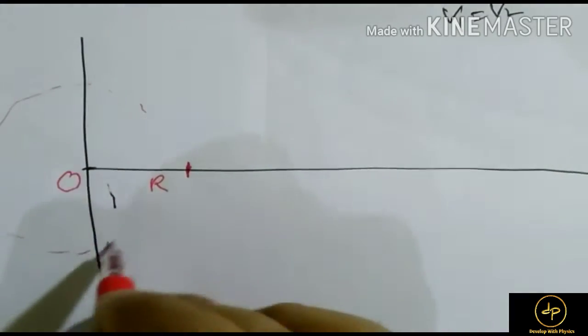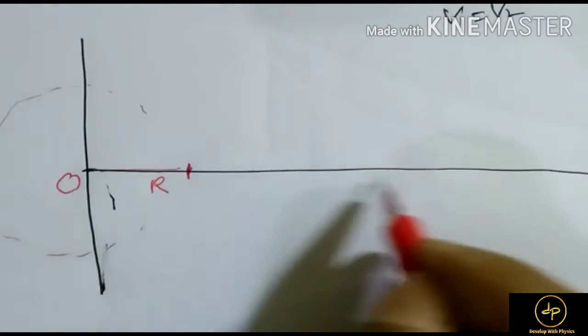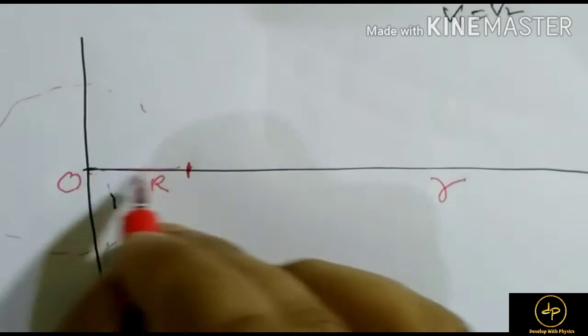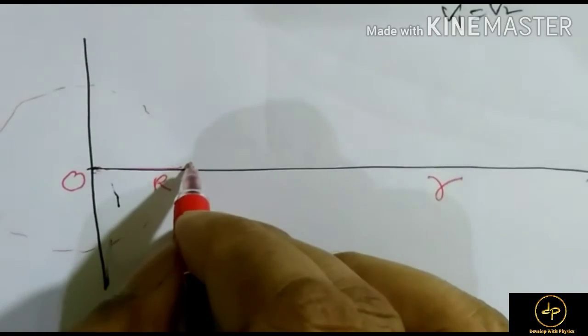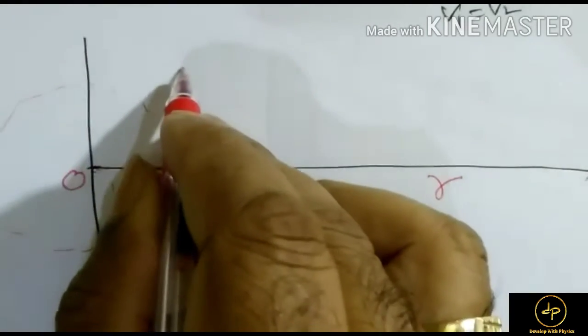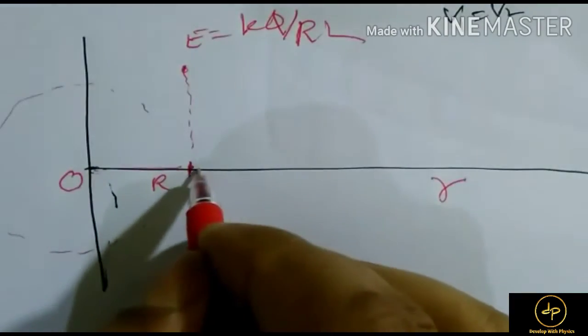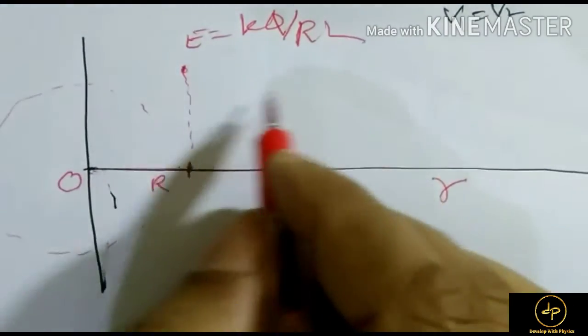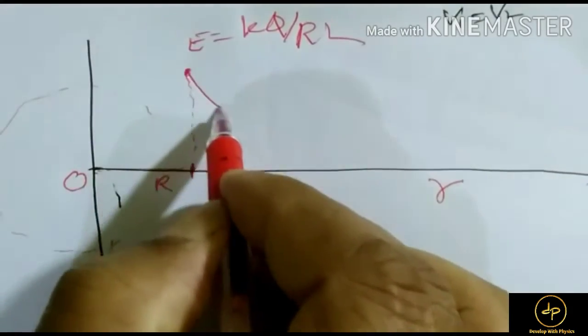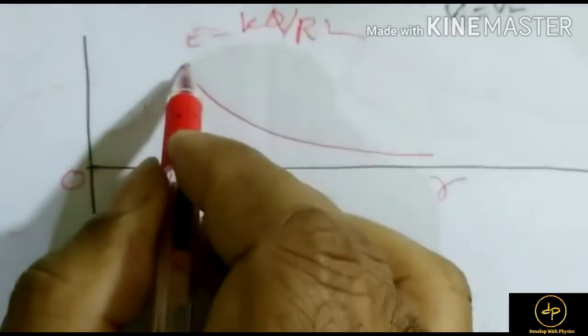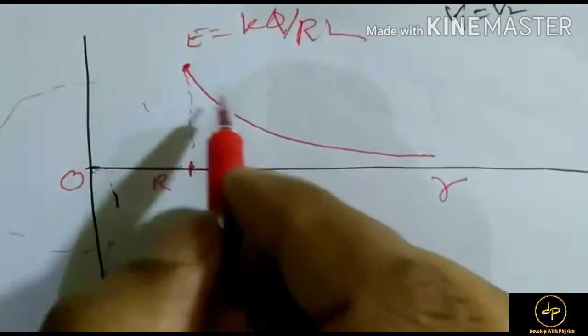This is the radius, and this line shows the distance from center, that is small r. The field at large distance is very high. The value of this field equals kQ/R² at the surface. After that, the field decreases by 1/r², so the field falls very rapidly. Here the maximum value of the field is obtained. This is the variation of electric field.